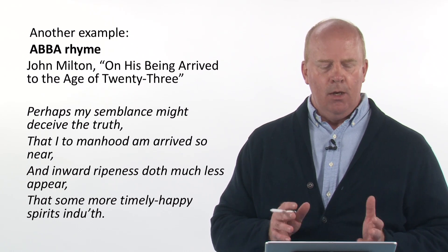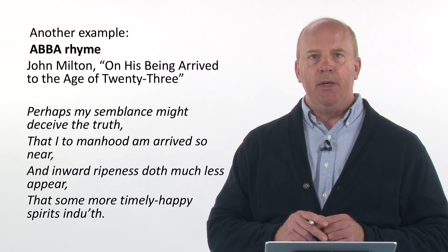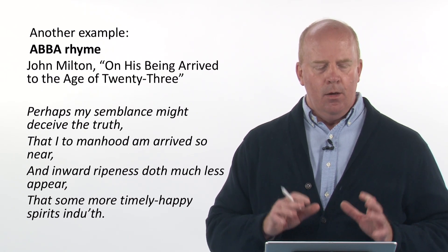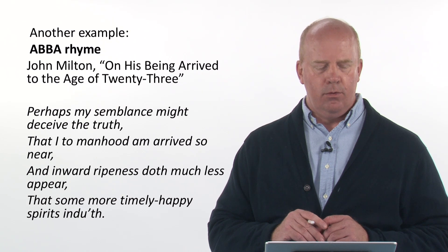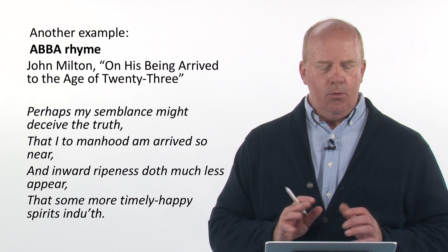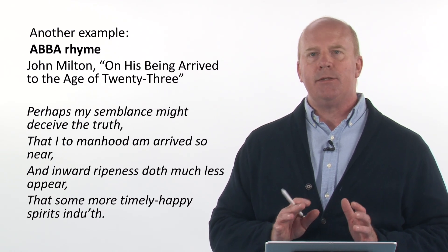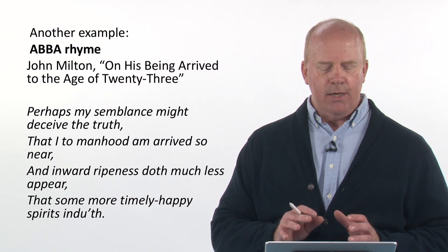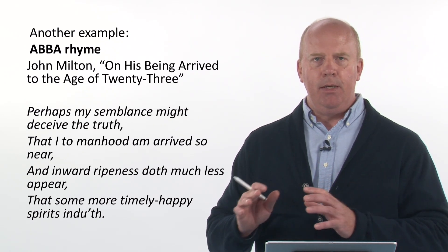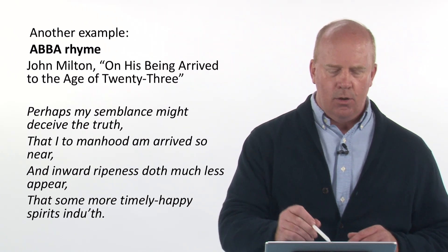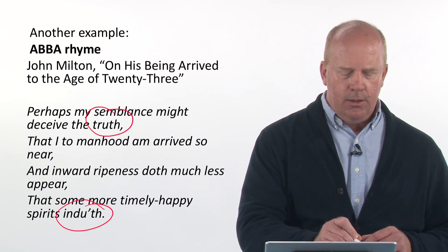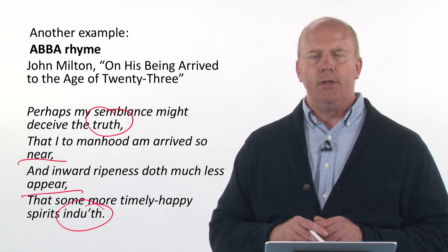Now let's look at an ABBA rhyme. From John Milton's 'On His Being Arrived to the Age of 23': 'Perhaps my semblance might deceive the truth, that I to manhood am arrived so near, and inward ripeness doth much less appear, that some more timely happy spirits endu'th.' The rhyme words 'truth' and 'enduth' are the A rhymes, while 'near' and 'appear' are the B rhymes — an ABBA pattern.